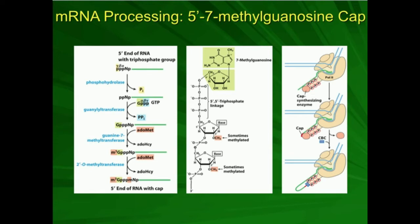In this video, we're going to be talking about the creation of the 5' 7-methylguanosine cap. We know that mRNA molecules have a 5' end and a 3' end. The 5' end is going to have a functional group added to it — a triphosphate linkage to another nucleotide, and then a 7-methylguanosine up here. This 7-methylguanosine cap has several purposes that we know of.